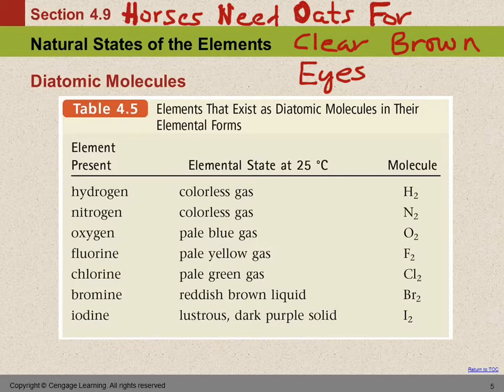So horses, H for hydrogen, need N for nitrogen, oats, O for oxygen, F for fluorine, CL for chlorine, BR for bromine. And this one's a bit of a stretch. Eyes. Clear brown eyes. So hydrogen, nitrogen, oxygen, fluorine, chlorine, bromine, iodine. Those are the seven elements that always exist as diatomic molecules.